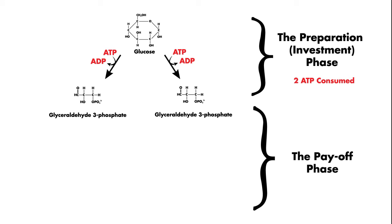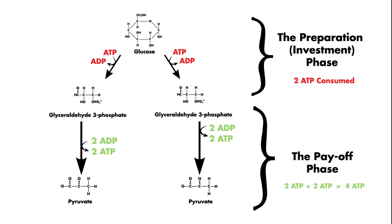In the payoff phase, each one of these glyceraldehyde-3-phosphate molecules undergoes a series of reactions to produce a pyruvate molecule and in return two ATP molecules are formed. And so, two ATP molecules plus another two ATP molecules equals a total of four ATP molecules and two pyruvate molecules made in the payoff phase from one molecule of glucose.